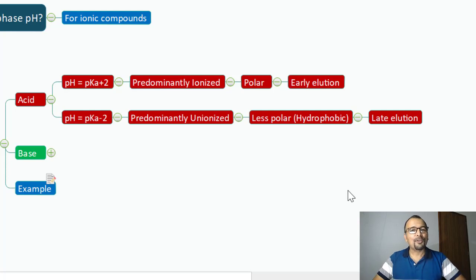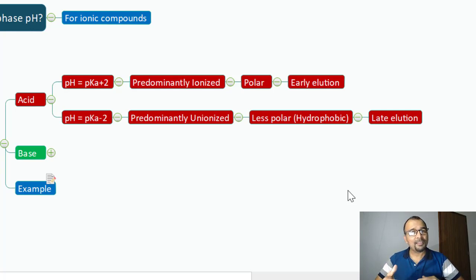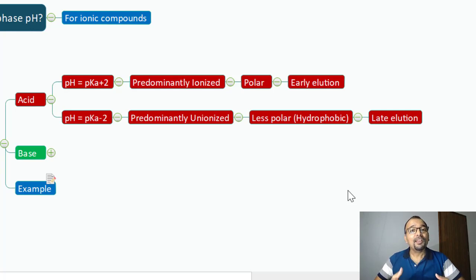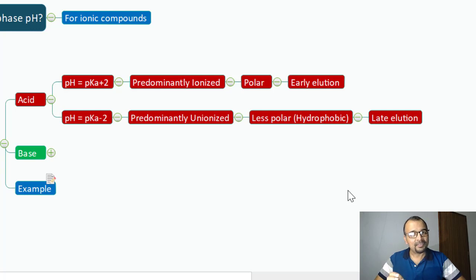The compound will elute late in the chromatography graph. So this is the way you can manipulate the retention of a weak acid by addressing the pH less than or more than its pKa value. If you keep the pH of the mobile phase more than its pKa, the compound is going to elute very early. If you keep the mobile phase pH less than its pKa value, the compound will retain for a longer time and elute late in the chromatography graph. This is how the retention of an acid changes with the mobile phase pH.